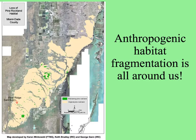Anthropogenic habitat fragmentation has changed the distribution of the pine rocklands from its original extent, shown in this picture by a pinky beige color. That color indicates the rocklands that don't remain anymore because people live on them or have farmed them. The little green patches are those that remain — it's less than 2% of the original extent, especially outside of Everglades National Park.